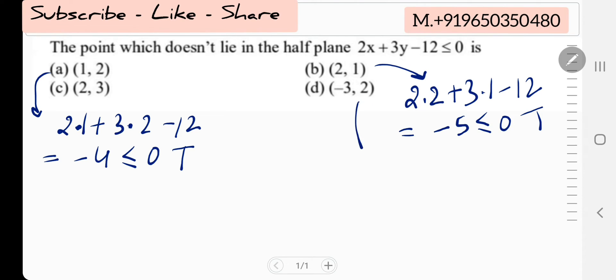We will check option D, (-3, 2): we get 2(-3) + 3(2) - 12 = -6 + 6 - 12 = -12 ≤ 0. This is also true.